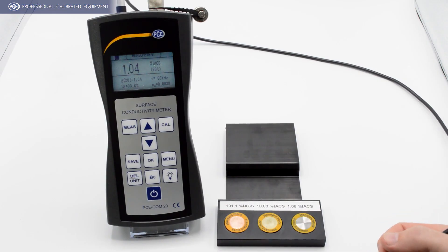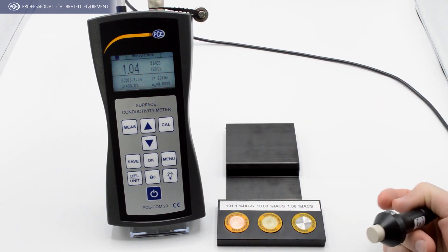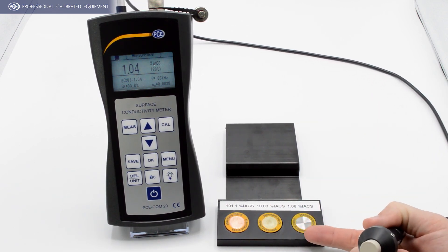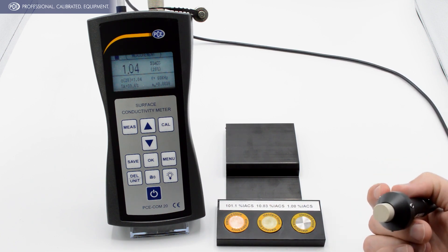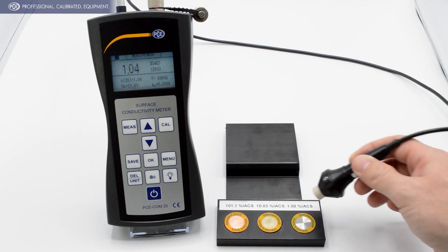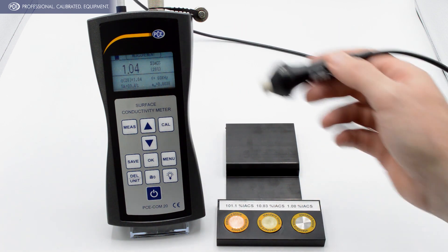So for this application video we're going to be looking at a piece of aluminum. This is the standard calibration block that comes with the meter. We've already done the two-point calibration procedure which is listed in the manual. So I'm going to show you on the calibration standards that it's pretty dialed in.